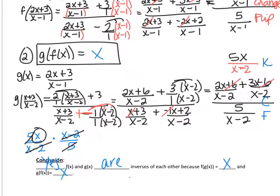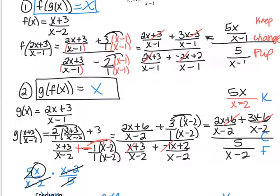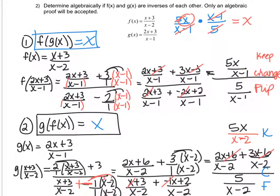I know this was a lot of algebra to swallow, so please make sure you're looking through this and jotting down questions to ask in class. But the real point of this lesson was to know that to prove an inverse, you have to show that f of g of x comes out to x and g of f of x comes out to x. If you understood this, we'll practice the rest in class tomorrow. Thank you.